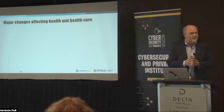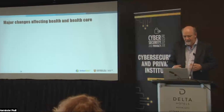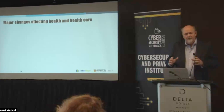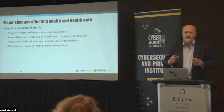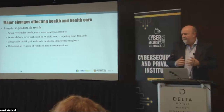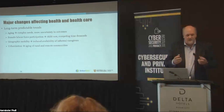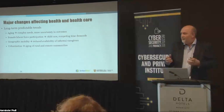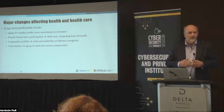Let's think about the healthcare system, where the only constant is change. Many changes happen over the course of decades. Population aging is one example — it leads to a population with more complex needs and more uncertain outcomes in healthcare systems, and potentially higher demands for certain kinds of services.